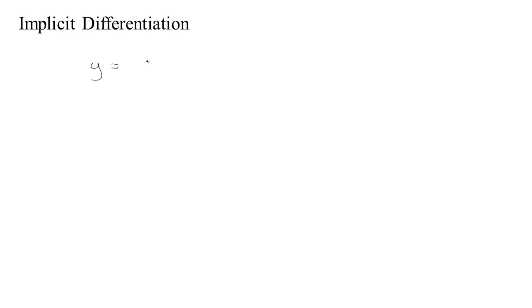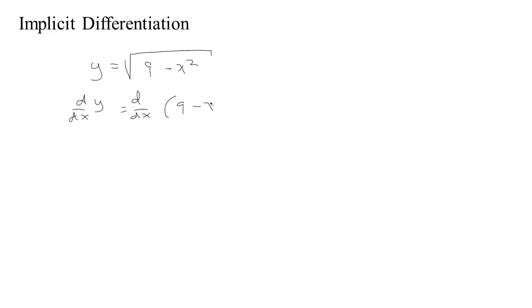When we have one variable explicitly as a function of the other — for example, if we have y equal to the square root of 9 minus x squared — then we could just take the derivative of both sides with respect to x to find how y changes with x. So if we take the derivative with respect to x of this side, I'm going to write it as 9 minus x squared to the 1/2 power. On this side, we get dy/dx, the rise over the run, change in y over change in x.